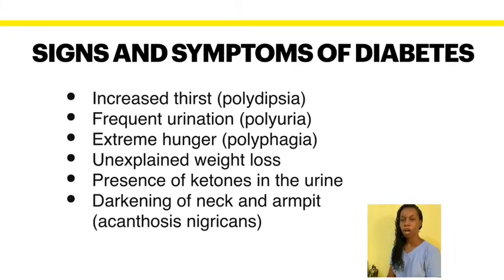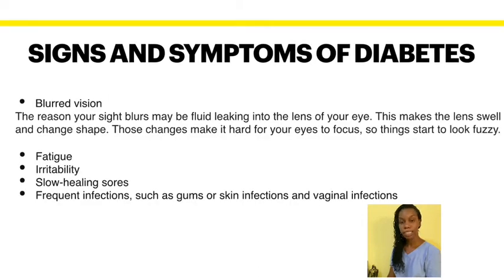Regarding blurred vision: with uncontrolled diabetes, you find that fluid shifts and may leak into the lens of the eye. When fluid leaks into the lens, it causes the lens to become swollen, which changes the shape of the lens. Once the shape of the lens changes, it becomes harder for the eye to focus, and the vision becomes blurry or fuzzy.